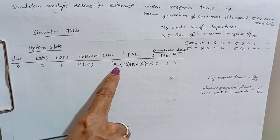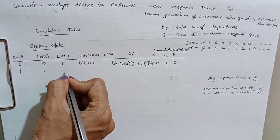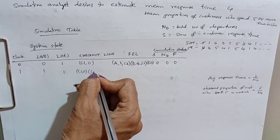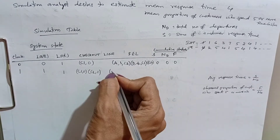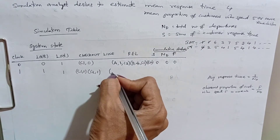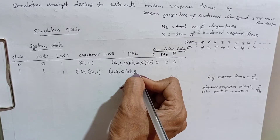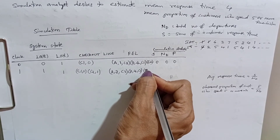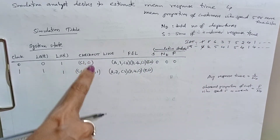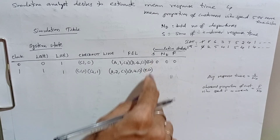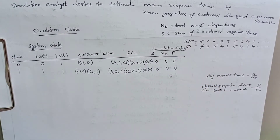Advance the clock to the imminent event at 1 minute. At 1 minute, customer C2 enters the system and must wait since C1 is still in service. C2 arrived at clock time 1. The next inter-arrival time is 1 minute, so C3 arrives at time 2. The stopping event remains at 60. Since no customer has completed service yet, we cannot update the cumulative statistics S, ND, or F.